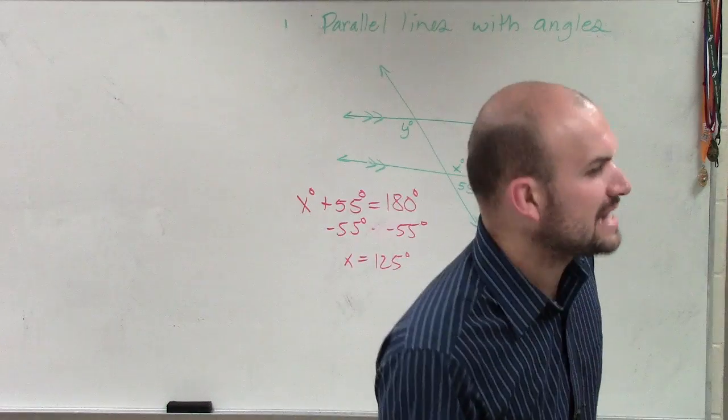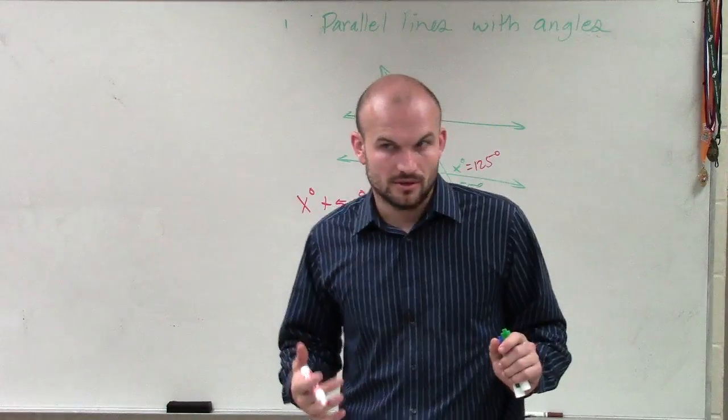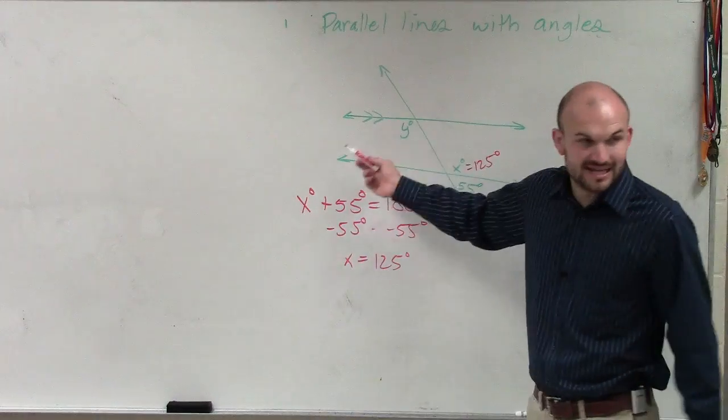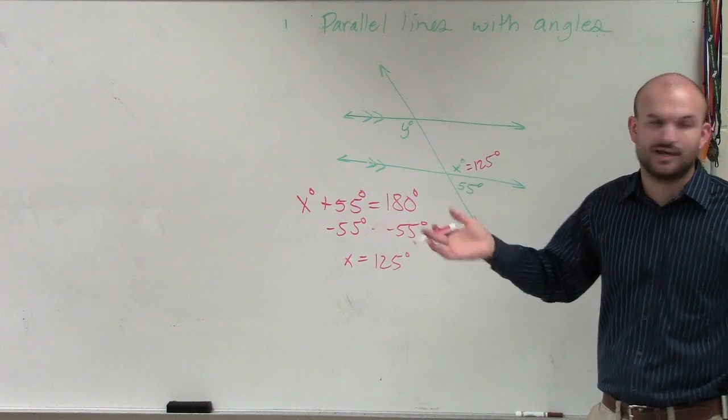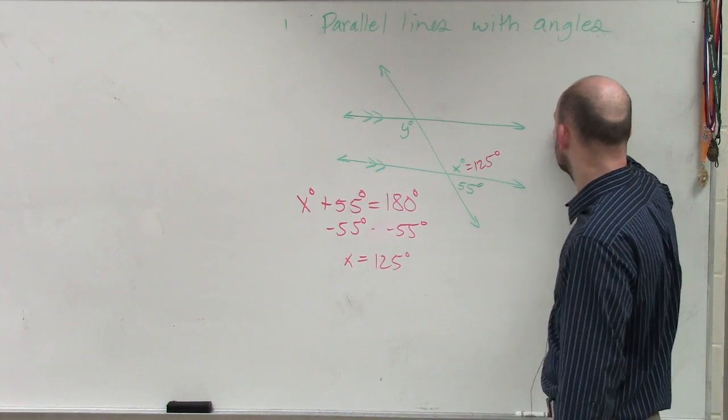Well, what I noticed is they're both interior angles, right, and they're on opposite sides of the transversal. So therefore, we know there are alternate interior angles, and alternate interior angles are equal to one another.